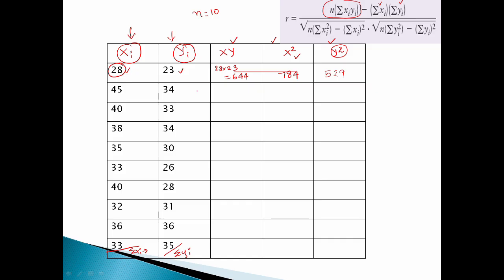The next row: 45 into 34 equals 1530. This is xy for this row. Next, x squared: 45 squared is 2025. Next, y squared: 34 squared is 1136.